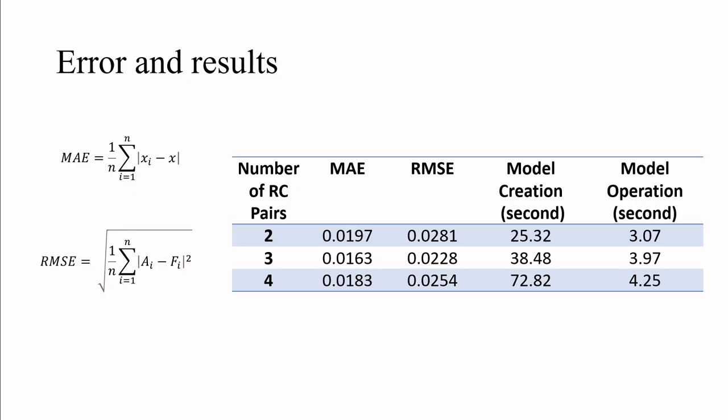After processing the initial data for parameters, the lookup tables are fed into a battery model. The next task is to determine the error for the new validation set. Overall, the 3RC model is nominal in terms of error, operation, and runtime.